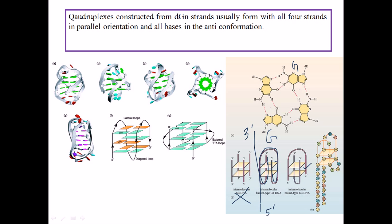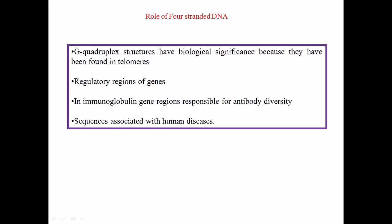Whatever type we are using — whether the same strand of polyguanine residues or two different strands — we still have to provide four guanine residues at the same plane. From a top view, you can see how four guanine residues are provided from each of the strands to make the structure. It is not necessary to have four independent strands; one strand can arrange itself to provide the four guanines.